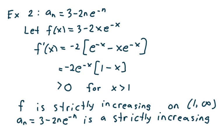In example 2, we have a sub n equal to (3 minus 2n) times e to the negative n. I'm going to employ the same strategy and let f of x equal (3 minus 2x) times e to the negative x. When I look at f prime of x, I get negative 2e to the negative x times the quantity (1 minus x).